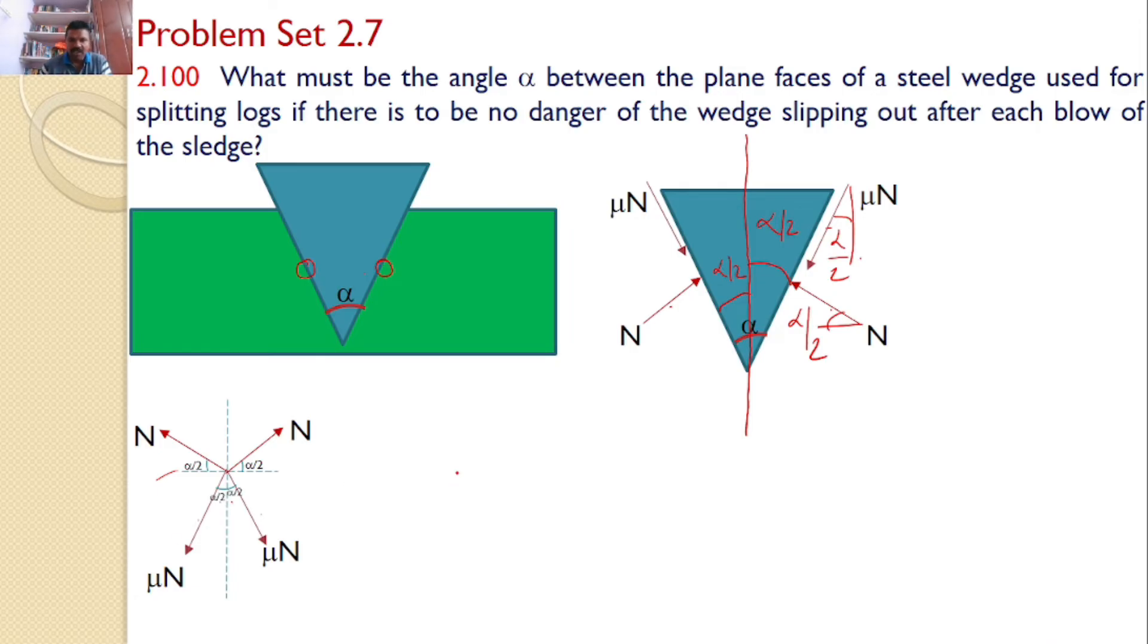Let us resolve all those forces along x-axis and y-axis. Now first this N force. N force I can resolve like this along x-axis and y-axis, and the horizontal component is N cos alpha by 2 and vertical component is N sin alpha by 2. Look at this, this value is N cos alpha by 2 and this value is N sin alpha by 2. Similarly, same is the case here. This N, I can resolve like this and like this. So this component is cos alpha by 2 and this component is sine alpha by 2. So you can see this component is N sin alpha by 2 and this component is N cos alpha by 2.